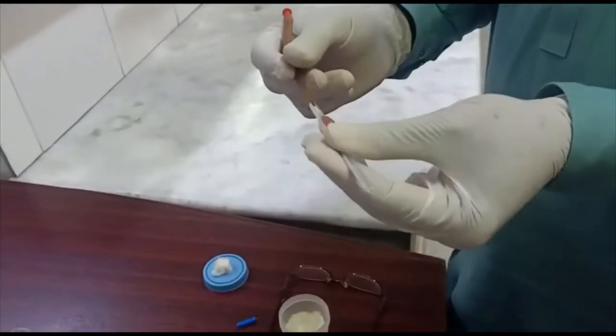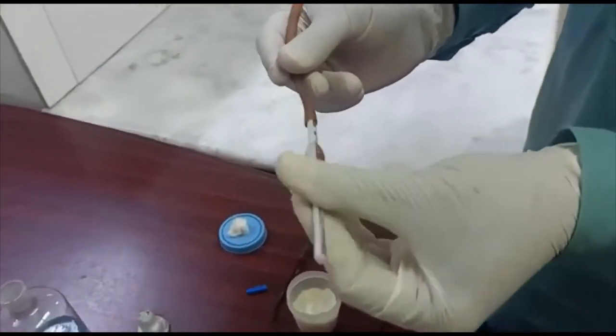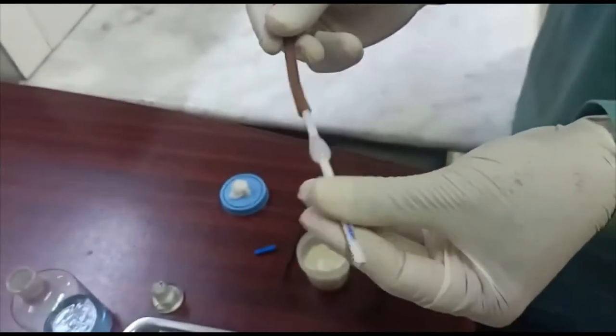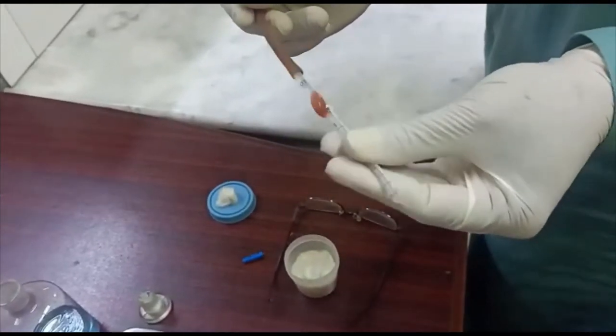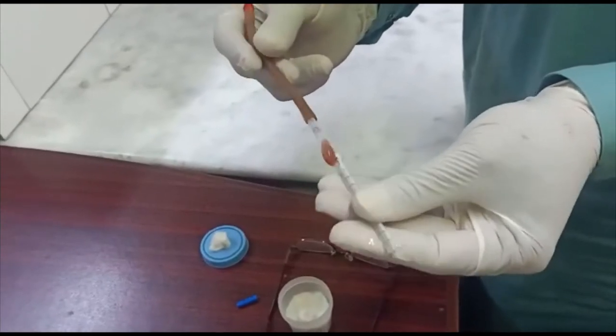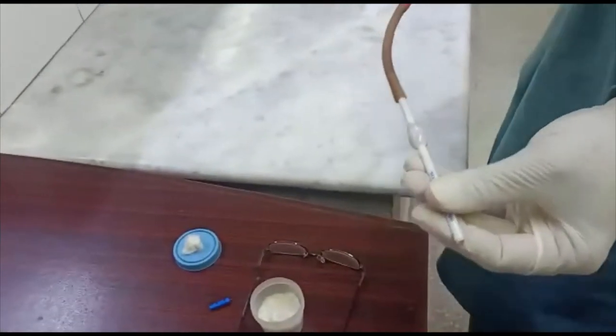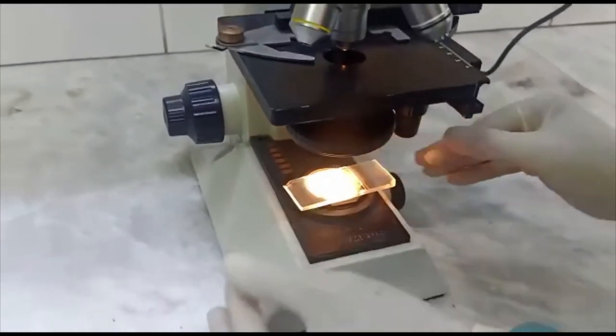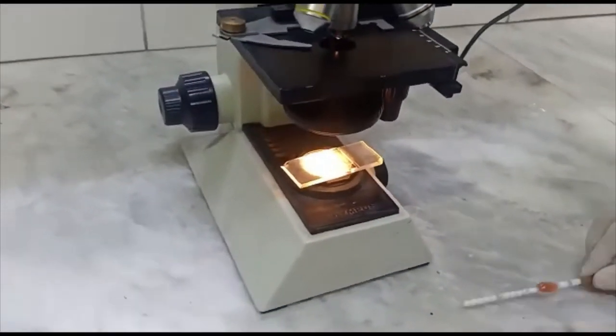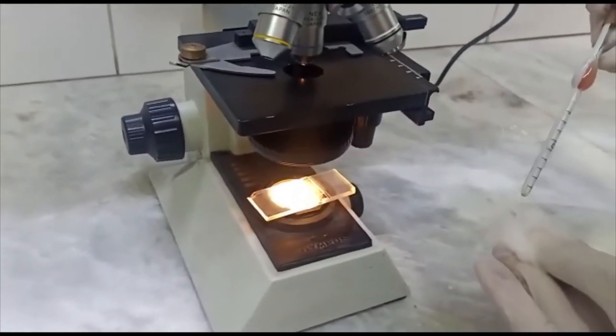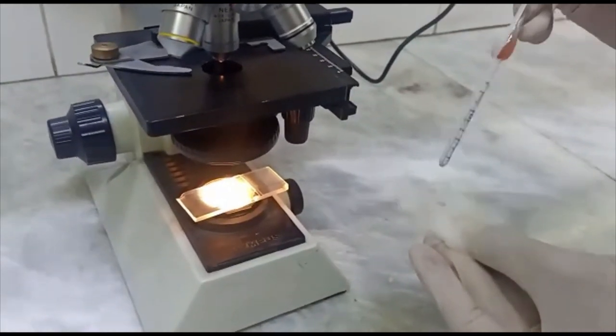Now we will roll the bulb of the pipette between our palms to mix the sample of blood with the diluting fluid. Then we will discard first two to three drops of the blood because they contain diluting fluid. We discard the first drops from the RBC pipette so no diluting fluid comes.